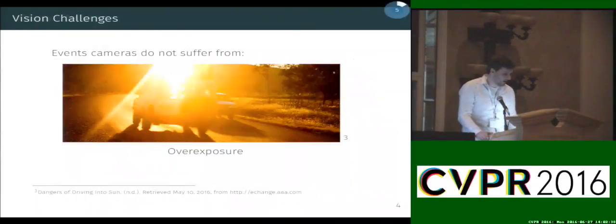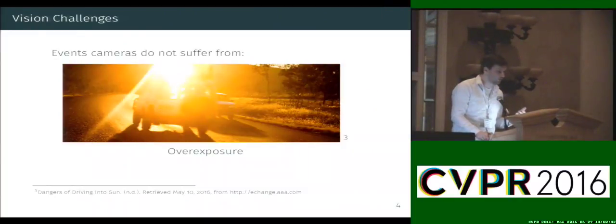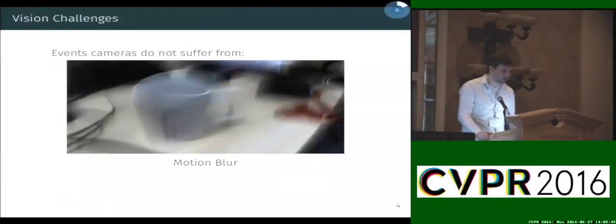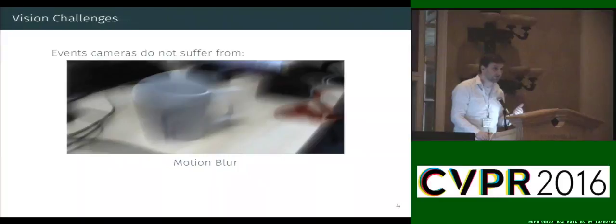For example, high dynamic range, so this camera does not suffer from overexposure like a normal camera. Also, it can deal way better with fast motions and does not suffer from motion blur because this camera does not have the concept of exposure time.